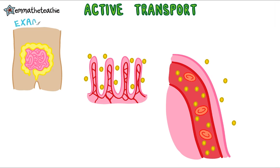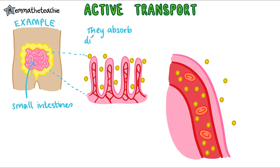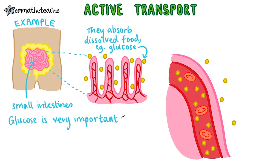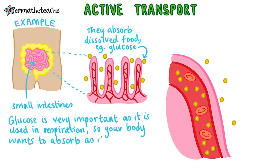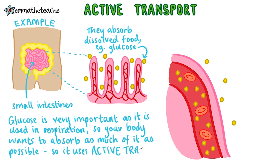Another common example of active transport is in the small intestines. If we zoom in on these, we can see that they are absorbing dissolved food molecules, for example glucose — that's the little yellow molecule there. Glucose is very important as it can be used in respiration to carry out lots of processes in your body. So the body wants to absorb as much of it as possible, and to do this it uses active transport.